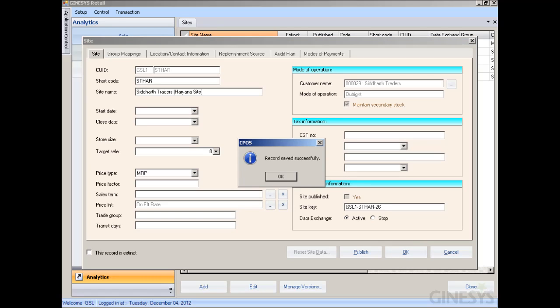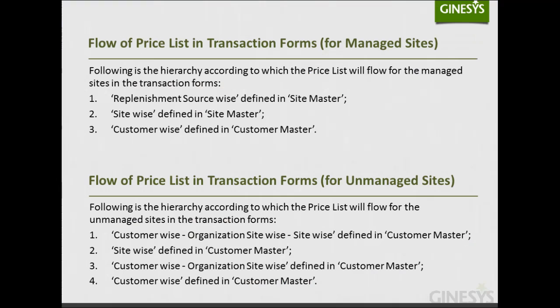In the Customer Master as well, we can define the price list in the Sales tab, just as in the case of an unmanaged site. Since the price list can be defined in various places for a single customer or site, let's clarify what happens when the price list is defined in one or more places and how it flows in the transaction forms.